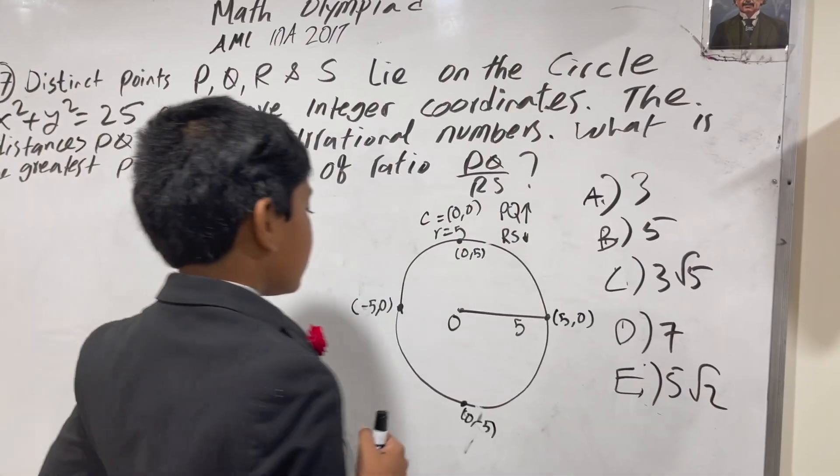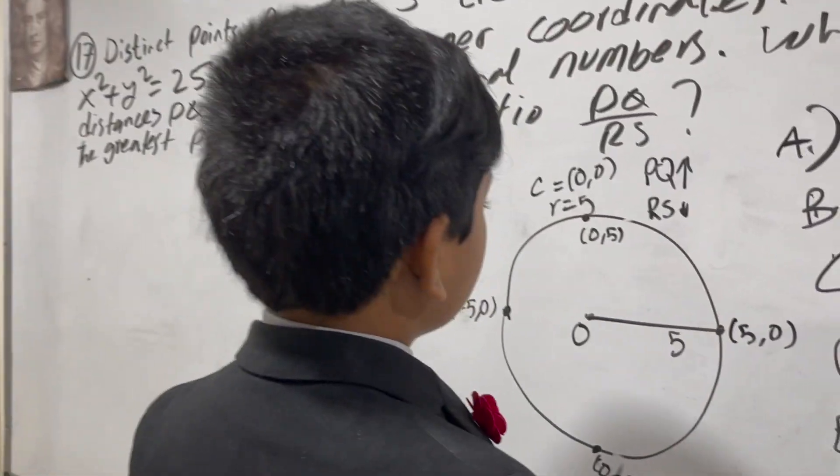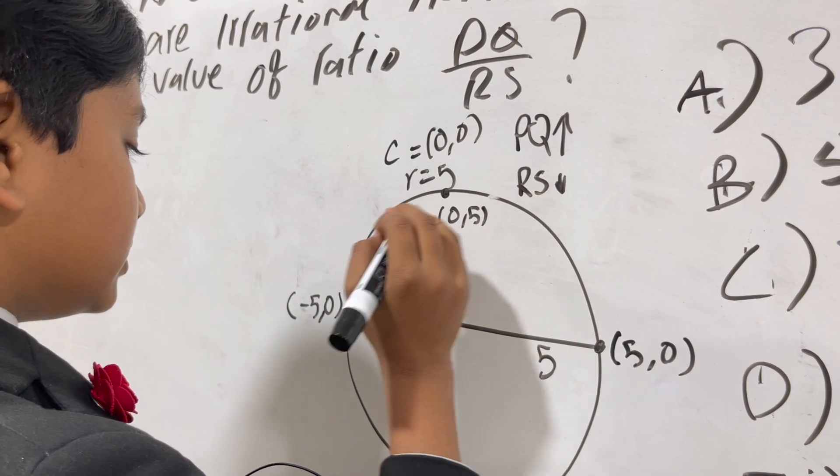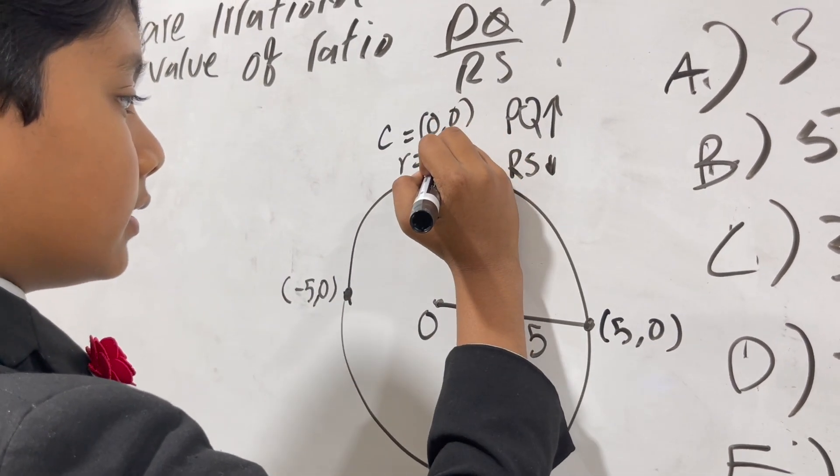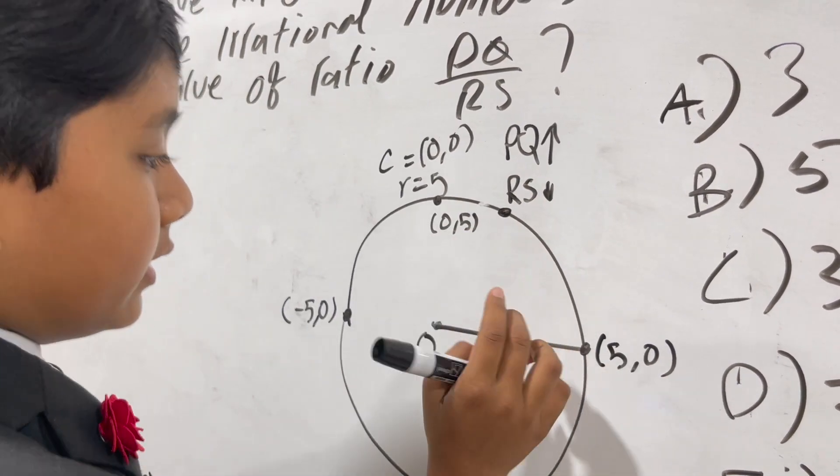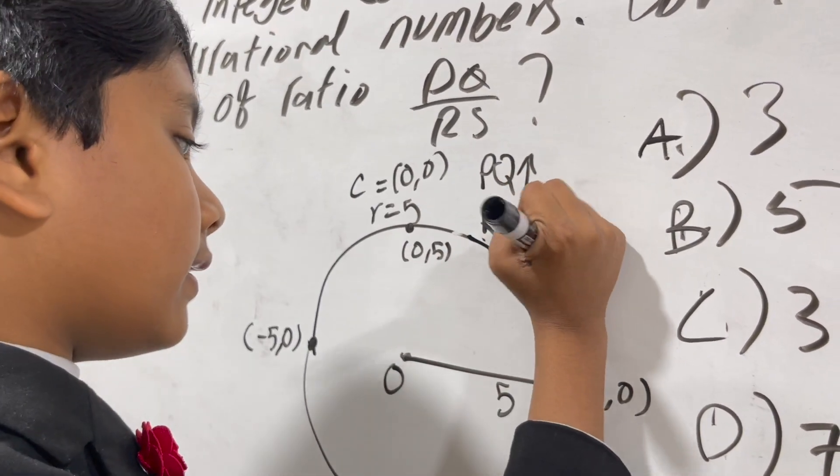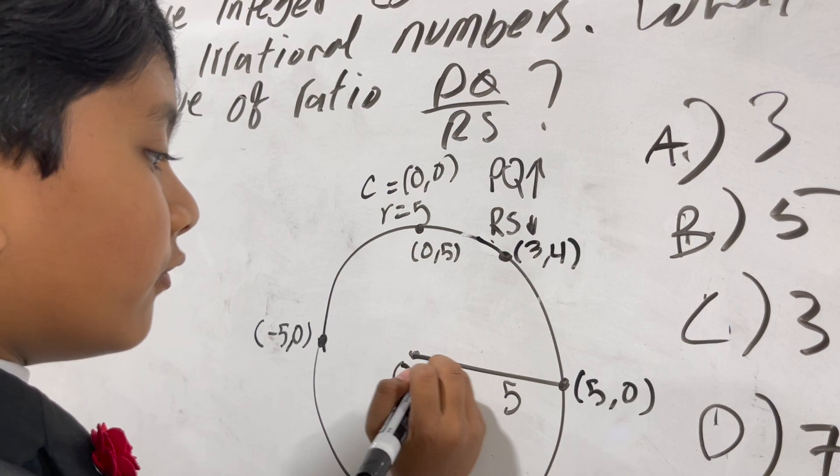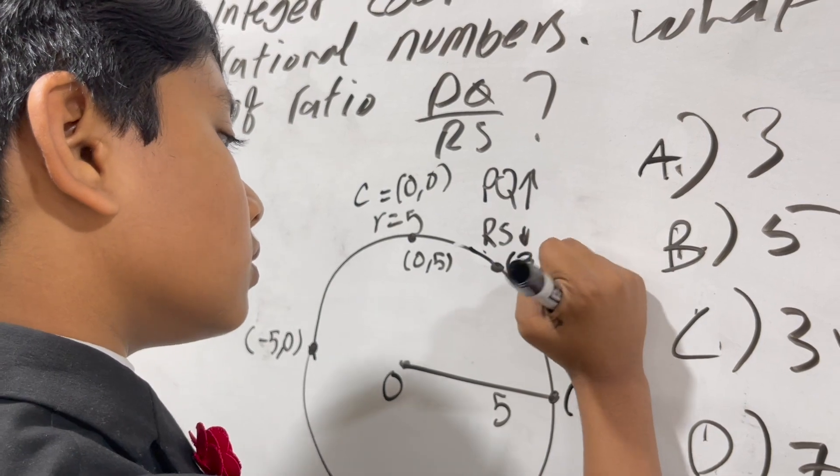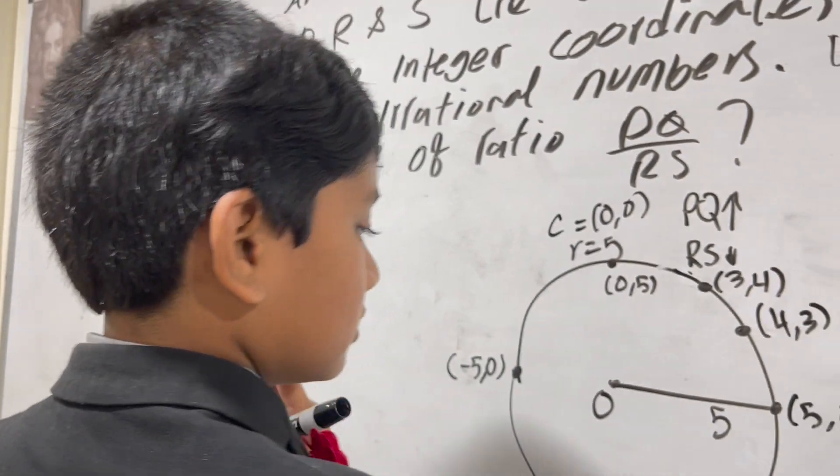And then comes these two. So we have, for example, we could have (3,4), which where could I put on here? This is 3, yeah, (3,4) is probably somewhere around here. Maybe a little bit more in this direction. And then (4,3) is about here. I know, doesn't look equally spaced. Don't tell anyone.